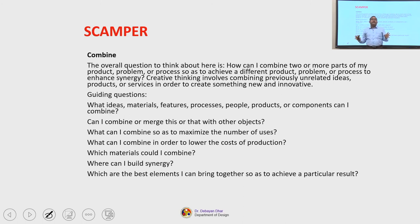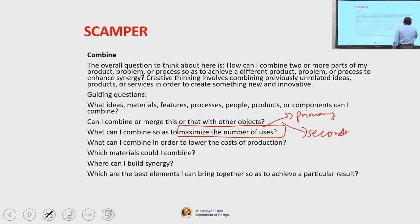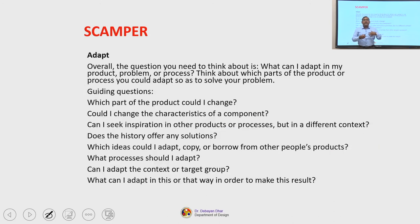Guiding questions for Combine include: what ideas, materials, features, processes, people, products or components can I combine? Can I combine or merge this with other objects? What can I combine so as to maximize the number of uses — addressing not only primary but also secondary and tertiary uses? What can I combine in order to lower the costs of production? Which materials could I combine? Where can I build synergy? Which are the best elements I can bring together to achieve a particular result?